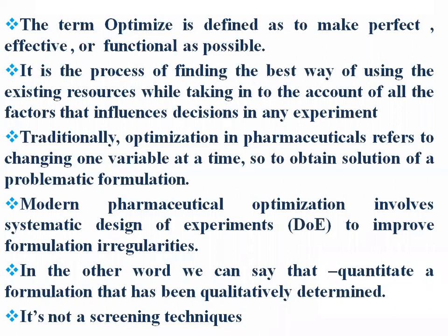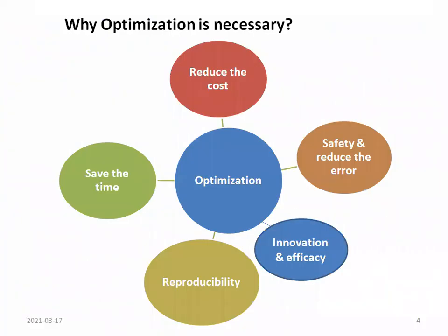It is a quantitative formulation that has been qualitatively determined — quantitative means we determine constant percentages like 10 percent or 20 percent, and qualitative means best formula, better formula, or worst formula. For example, 30 percent gives the best formula and 10 percent gives the worst. It is not a screening technique — we are not eliminating options for future use.